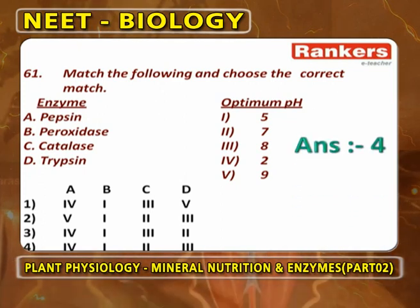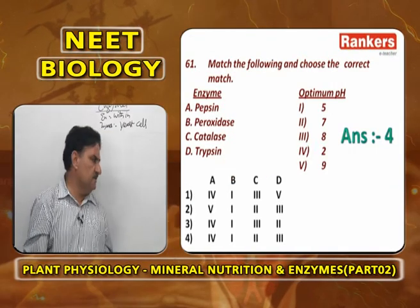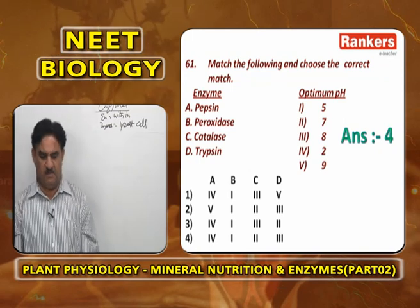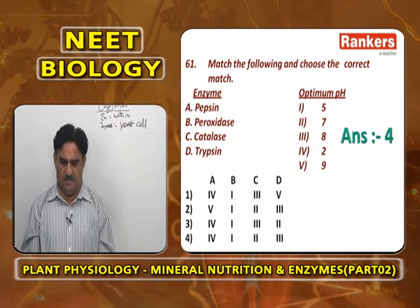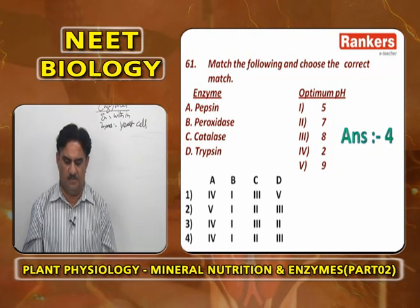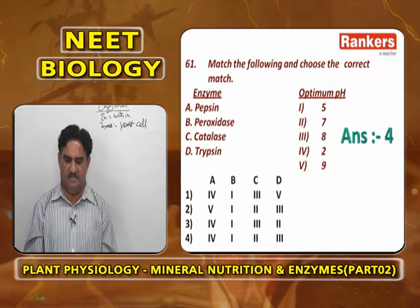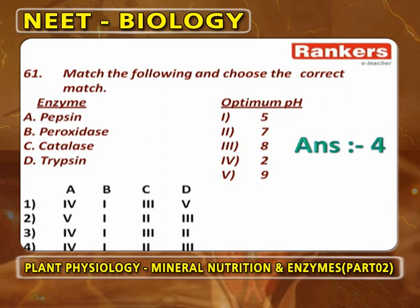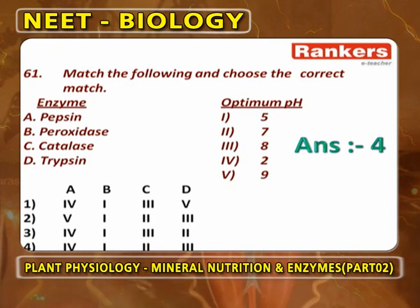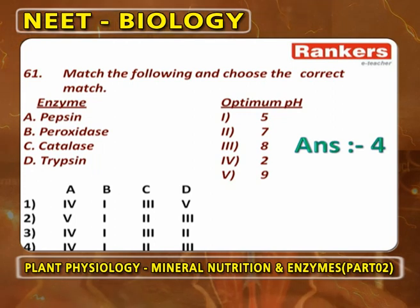Match enzyme with optimum pH: Pepsin is 2.0, peroxidase is 5.0, catalase is 7, trypsin is 8. So A (pepsin) matches 4 (pH 2), B (peroxidase) matches 1 (pH 5), C (catalase) matches 2 (pH 7), D (trypsin) matches 3 (pH 8). Answer: A4, B1, C2, D3.